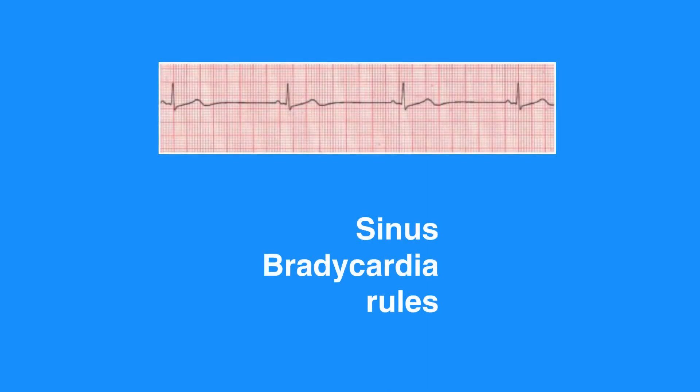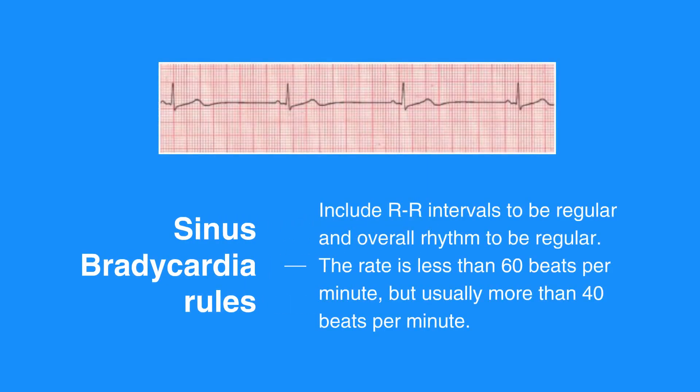Sinus bradycardia rules include RR intervals to be regular and overall rhythm to be regular. The rate is less than 60 beats per minute, but usually more than 40 beats per minute. There is one P wave in front of every QRS and they appear uniform. The PR interval measures between 0.12 and 0.20 seconds in duration and is consistent. The QRS complex measures less than 0.12 seconds.